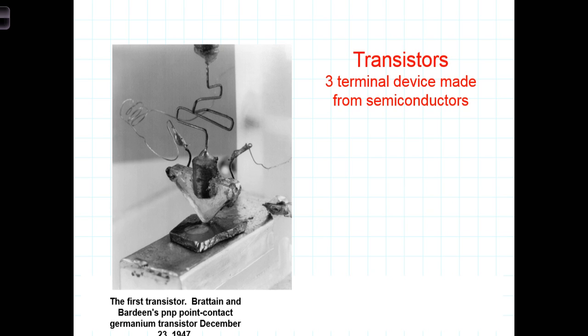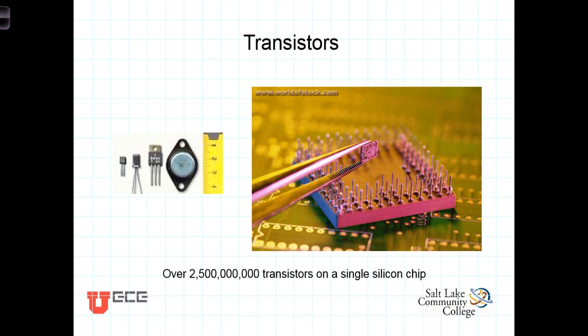Transistors are a three-terminal device. This is a picture of the original, the first operating transistors developed by Bell Labs back in 1947. As you can see there is a connector here, a terminal here, and then a terminal between the two. Over the 60 years since they were developed, transistors have gotten smaller and smaller and become more and more versatile. Current state of the art has well over two billion transistors on a single chip.